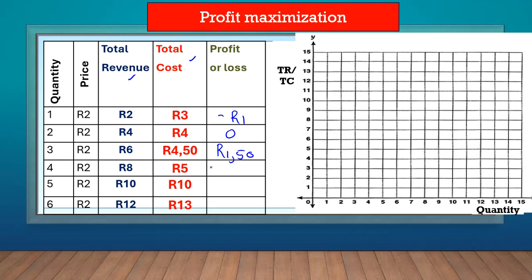Eight minus five gives us three rands profit. Ten minus ten is zero, so no profit nor loss. Twelve minus thirteen is minus one, so here we make a loss again. If we want to talk about profit maximization, we can see that profit is maximized when the quantity is four, because there we make a profit of three rands, which is the biggest or maximum profit we can get.